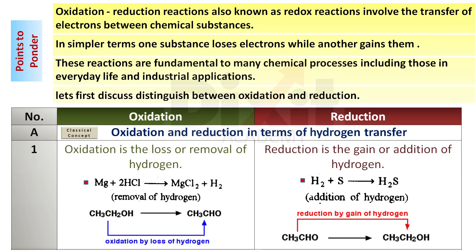Oxidation reduction reactions, also known as redox reactions, involve the transfer of electrons between chemical substances. In simpler terms, one substance loses electrons while another gains them. These reactions are fundamental to many chemical processes, including those in everyday life and industrial applications.